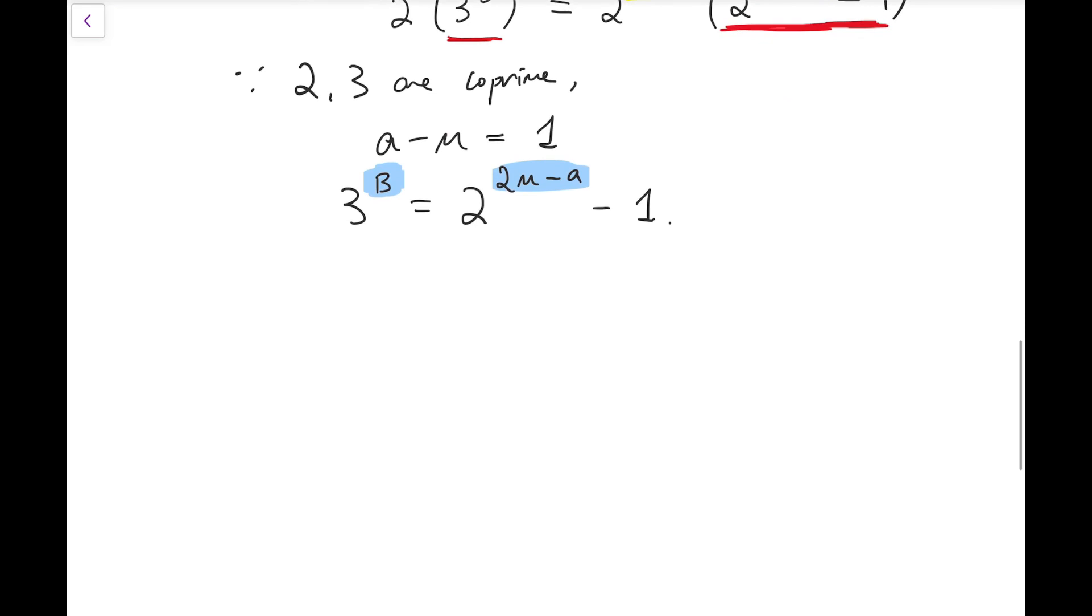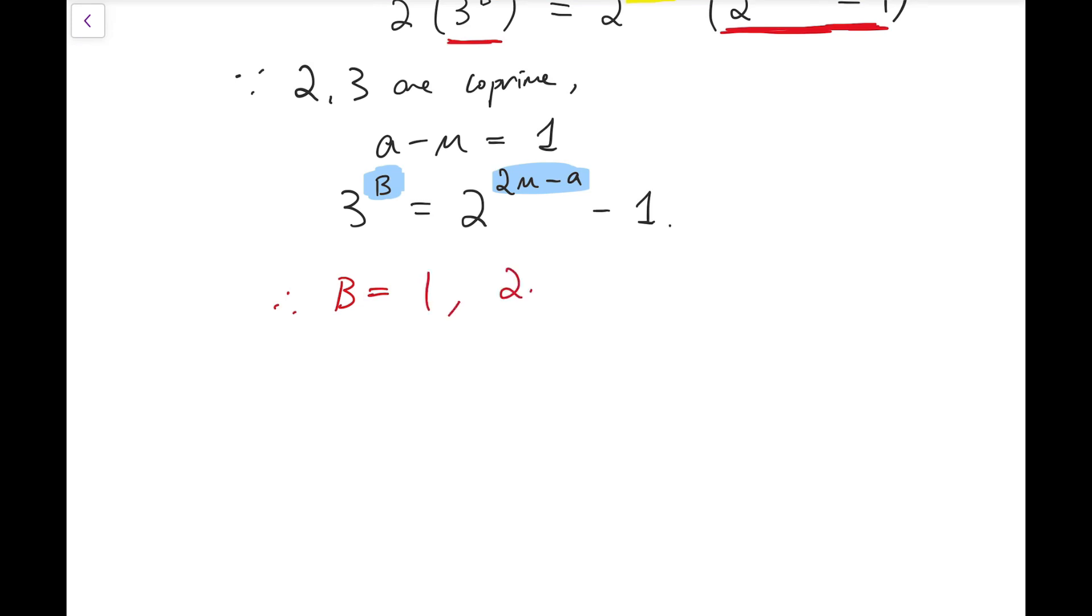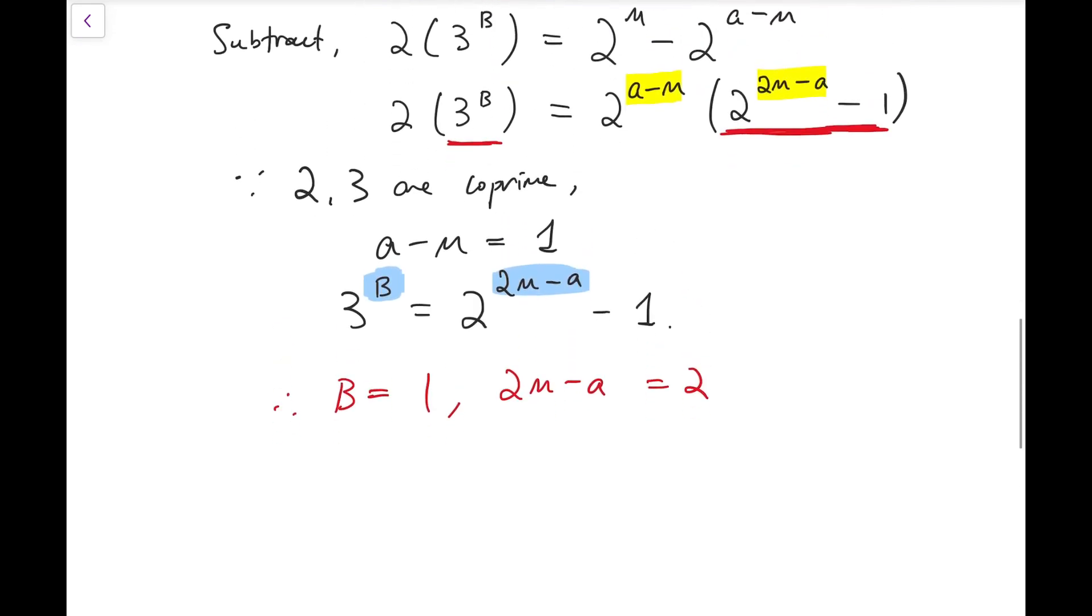So going back, I can say that therefore B has to be 1 while this 2m minus a has to be 2.